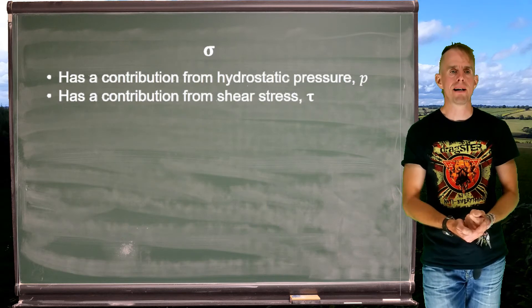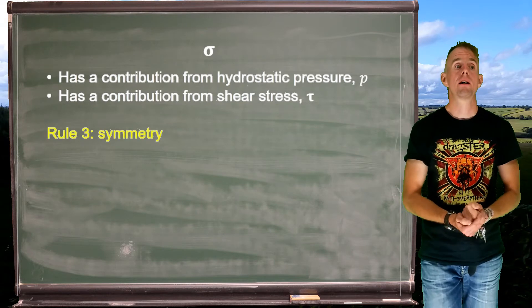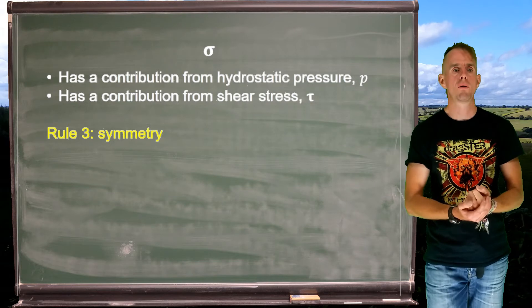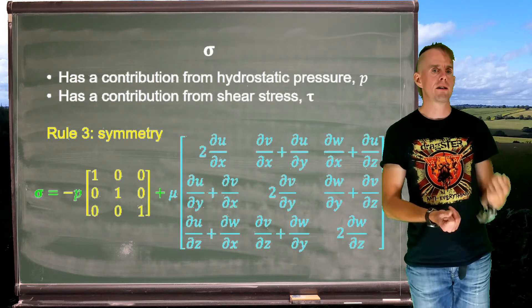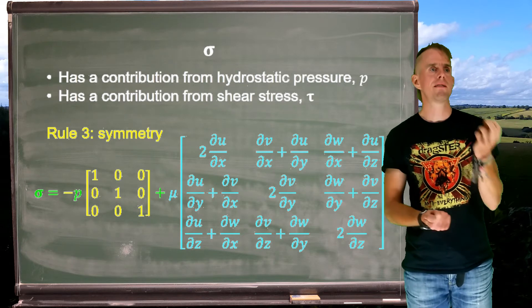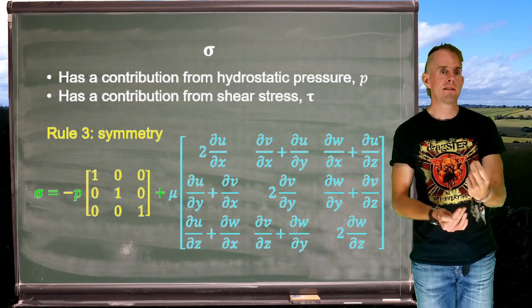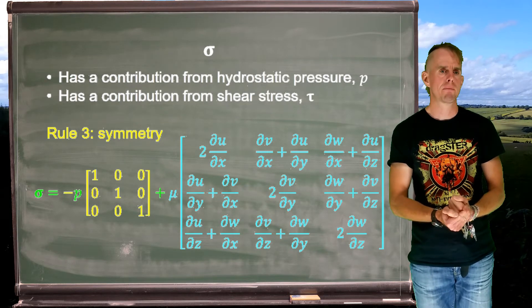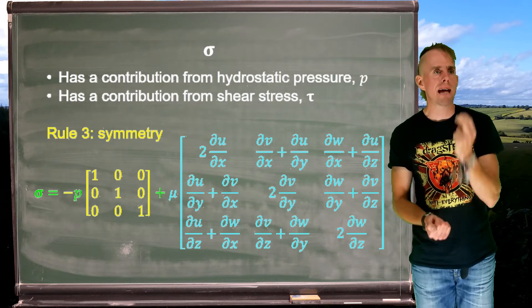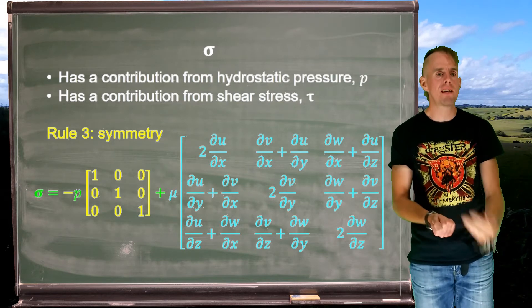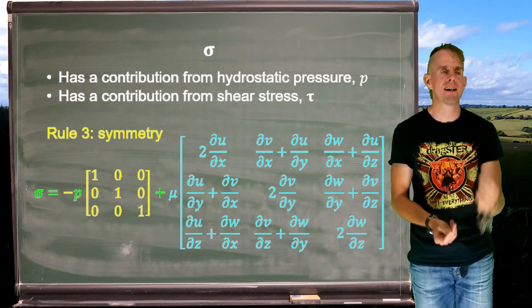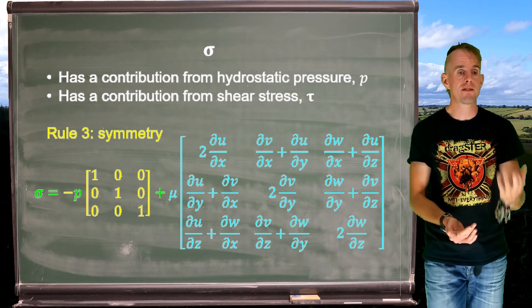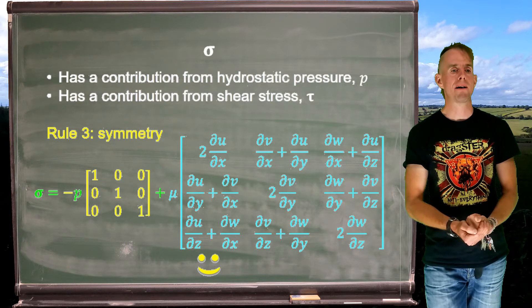Rank homogeneity is now obeyed. For rule three, symmetry: let's write our summation out in longhand. Sigma equals minus p times the identity tensor, plus mu times gamma-dot. The identity tensor is indeed symmetric — it has ones on the principal diagonal. We've already defined gamma-dot, our rate of strain tensor, to obey symmetry. So this sum is symmetric, and we can be happy about that.